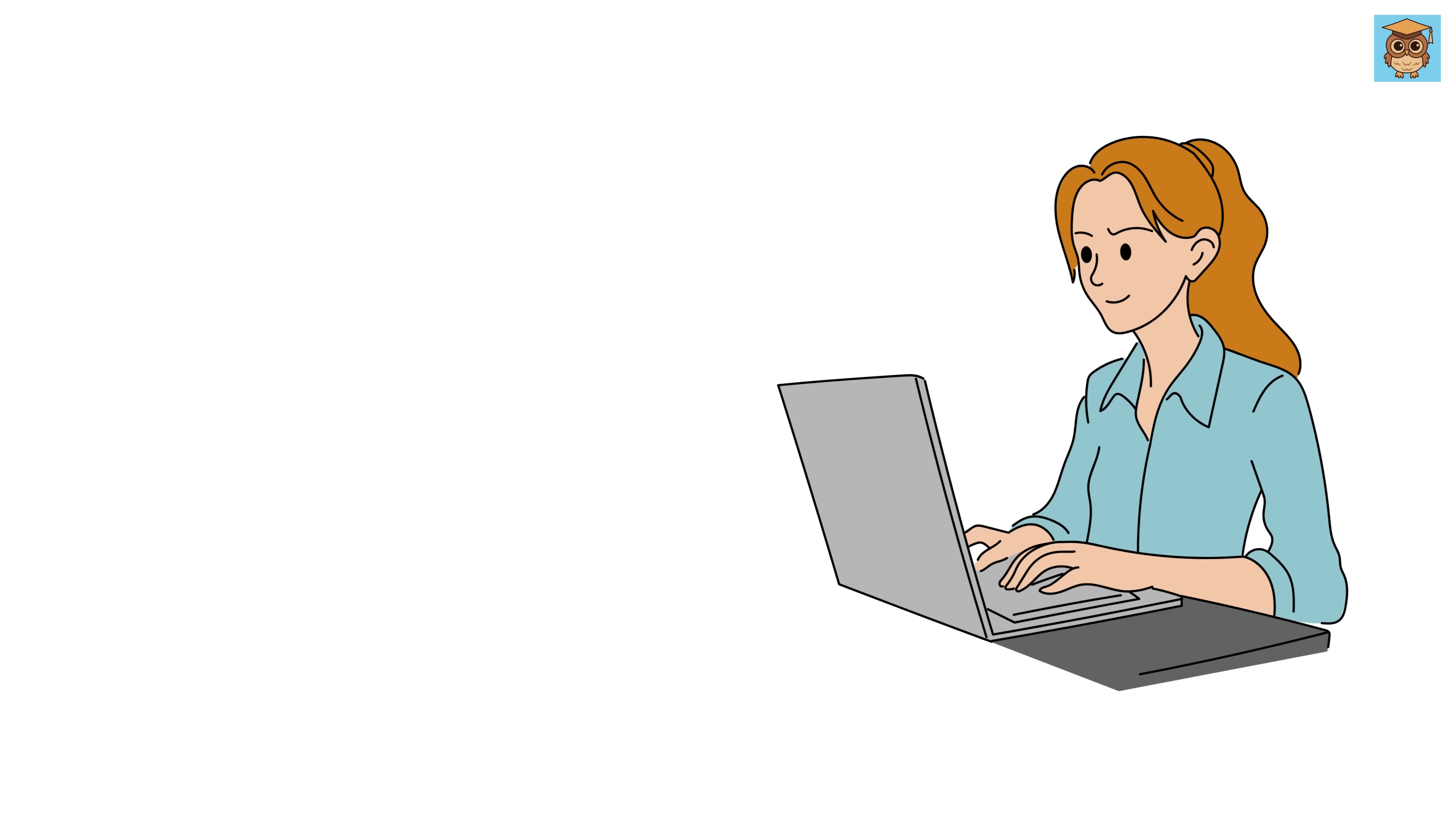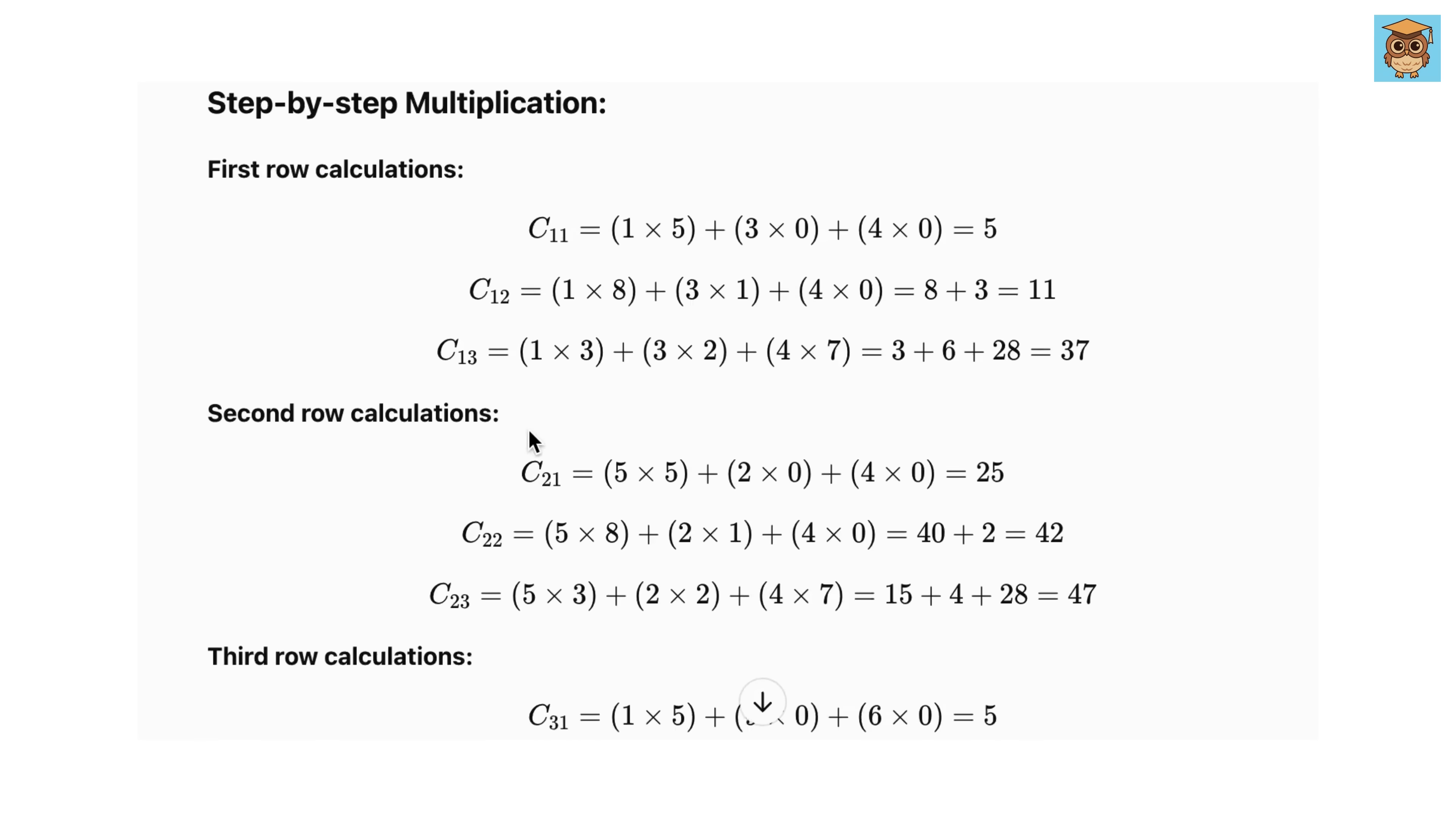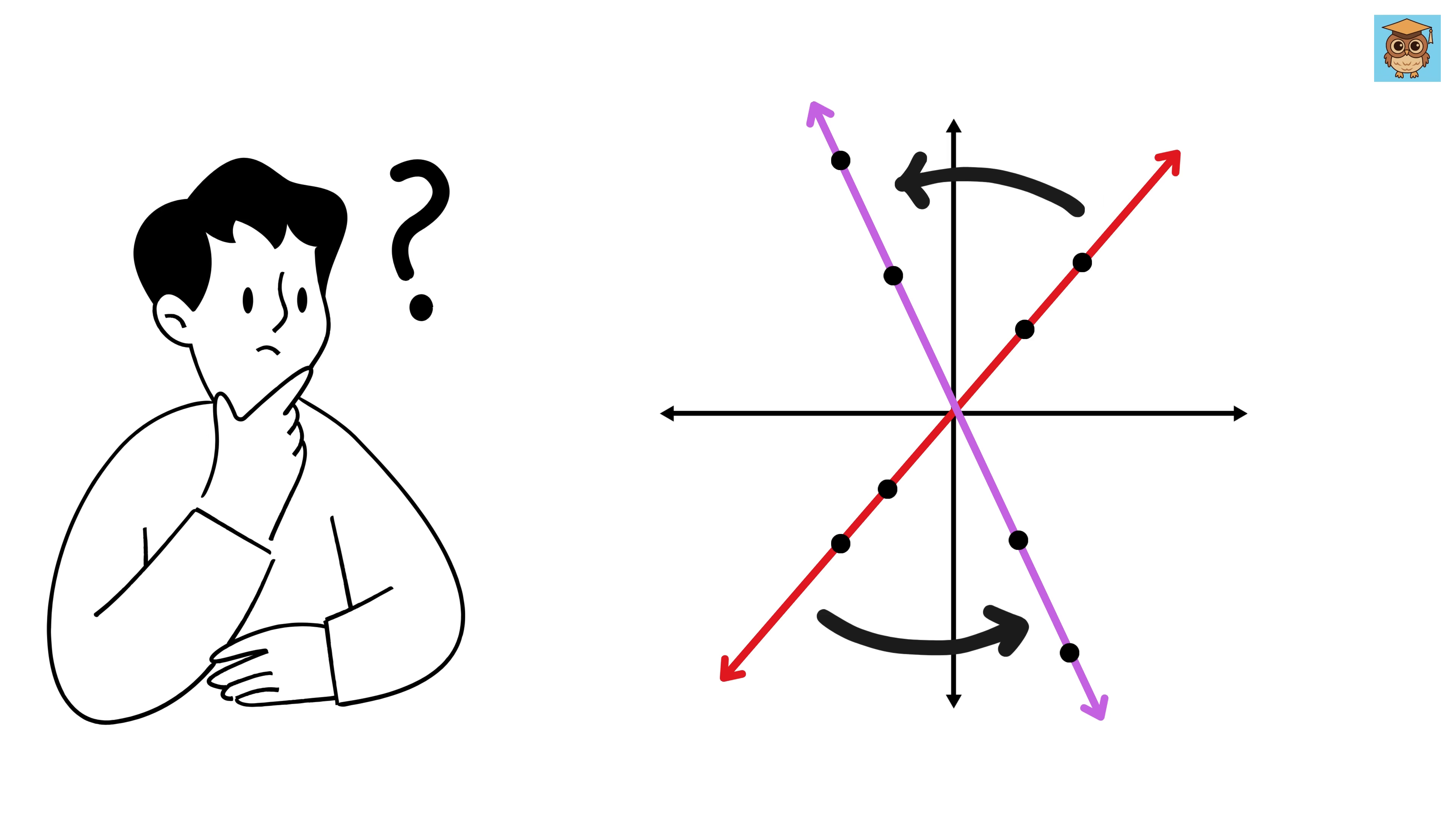In high school math, we are often given two matrices, or a matrix and a vector. We are then asked to multiply them using some tedious operations and find the final result, which is either another matrix or a vector. However, we are usually taught to do these calculations blindly, without actually understanding why matrix multiplication works the way it does, or what they actually represent in real-world problems.